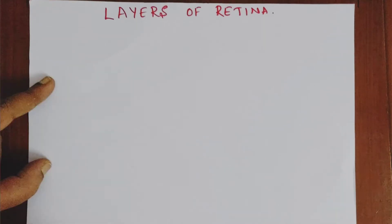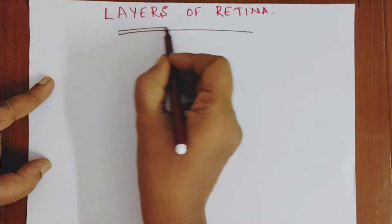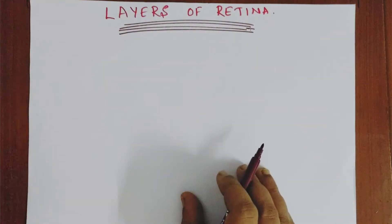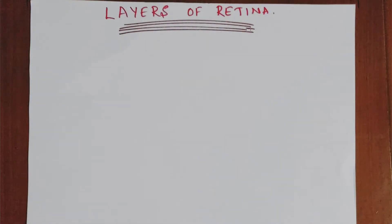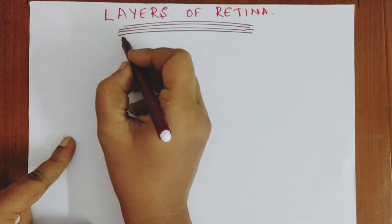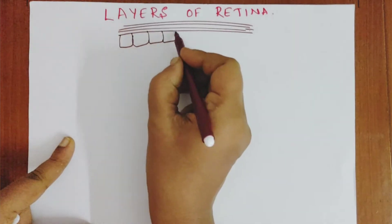As you all know, there are three coats of the eyeball. The outermost is the sclera, then the choroid, then the innermost is the retina. So let's say this is the choroid, shown here in brown color. Just adjacent to the choroid, we have what is known as the retinal pigment epithelium, also represented in brown color. So this is the retinal pigment epithelium layer.